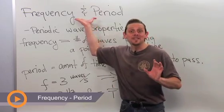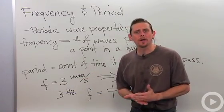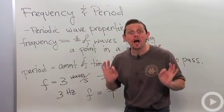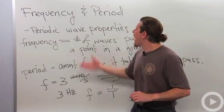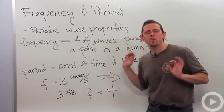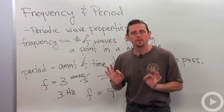Let's talk about frequency and period of a wave. Frequency and period are properties of periodic waves, kind of why they're called periodic waves. Frequency is the number of waves that pass a given point in a certain amount of time.